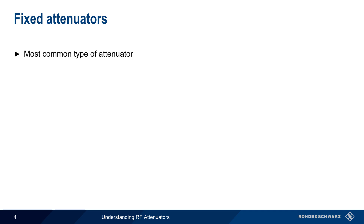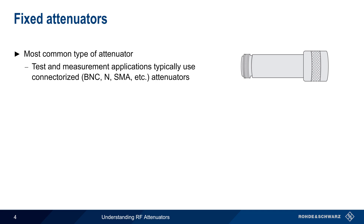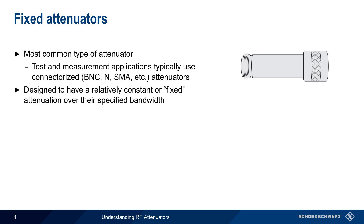Fixed attenuators are, by far, the most common type of attenuator. In test and measurement applications, these are almost always connectorized, so they can be directly attached to cables, devices, etc. As the name implies, they're designed to have a relatively constant, or fixed attenuation, over their specified bandwidth — they're not configurable or adjustable.